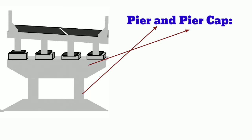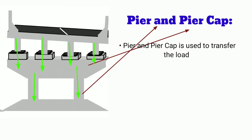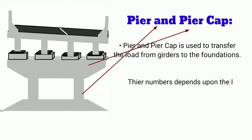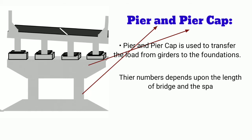Pier and pier cap are used to transfer the load from the girder to the foundations. Their number depends upon the length of the bridge and the span between the piers.